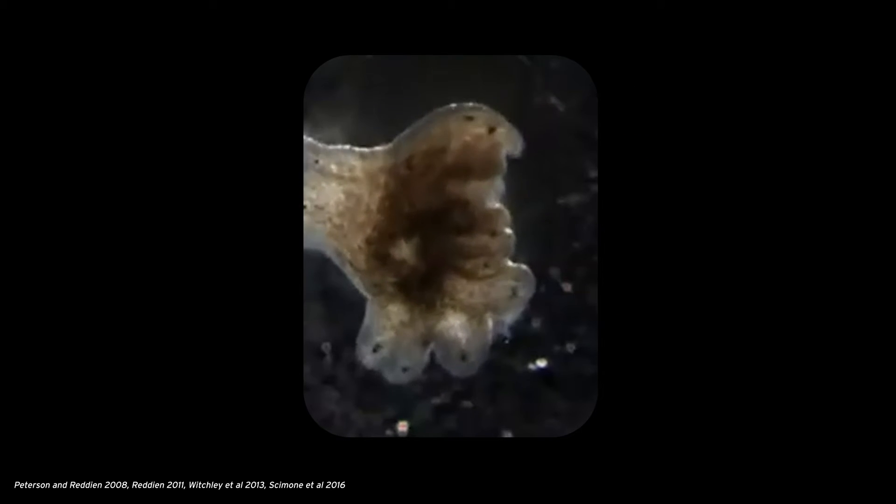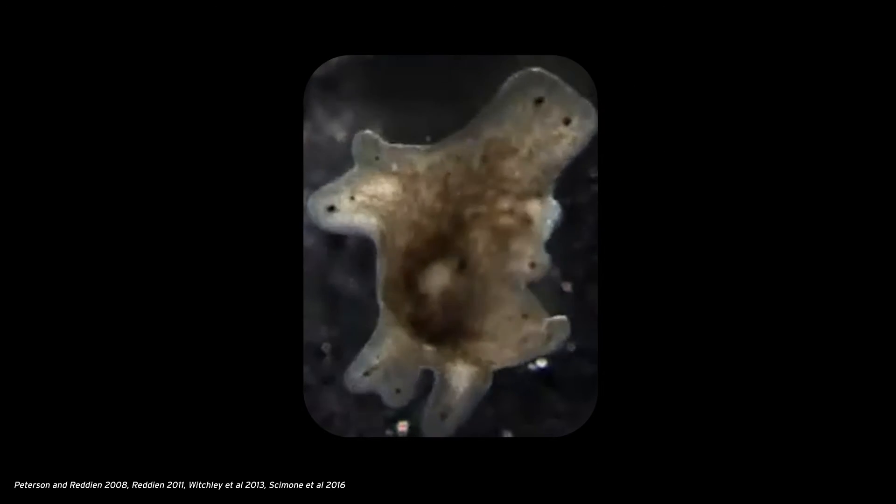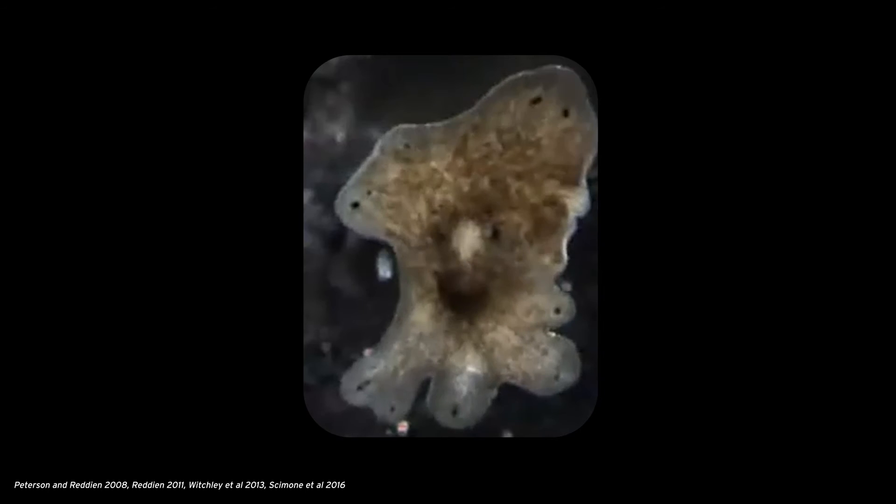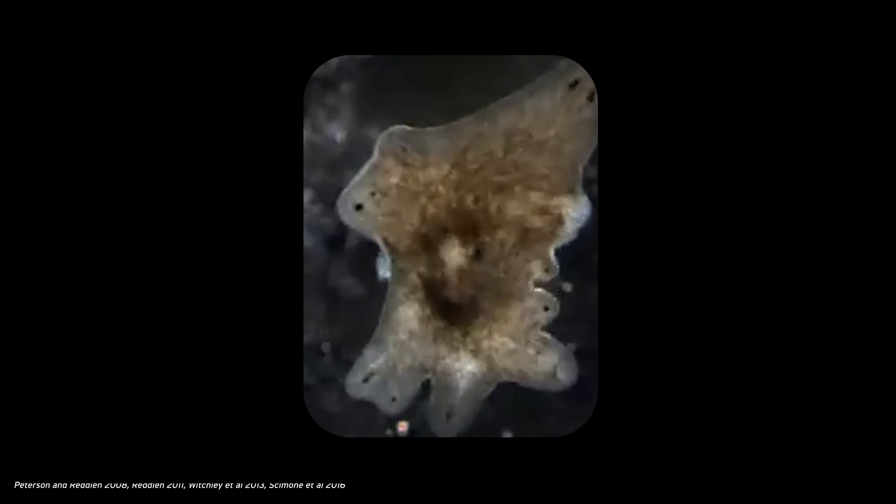For example, the genes that say 'this is tail' - if we get rid of that gene it no longer knows where to put a tail and then it thinks it's just supposed to put a head everywhere. Instead of making this nice normal looking worm it puts a head everywhere. It puts a head here and puts a head here and puts a head here and then you get these monster looking worms. Each head thinks it's the most important head and is trying to drive the worm in that particular direction.